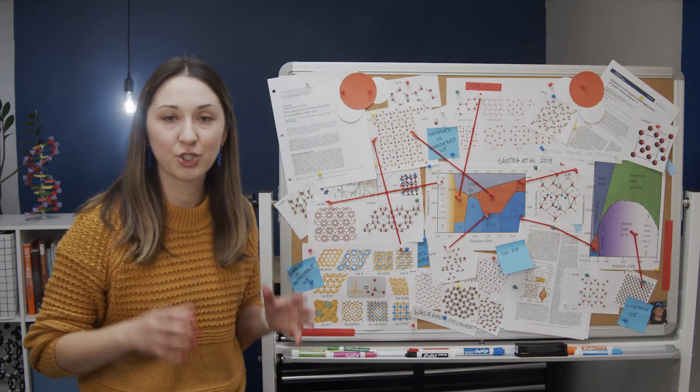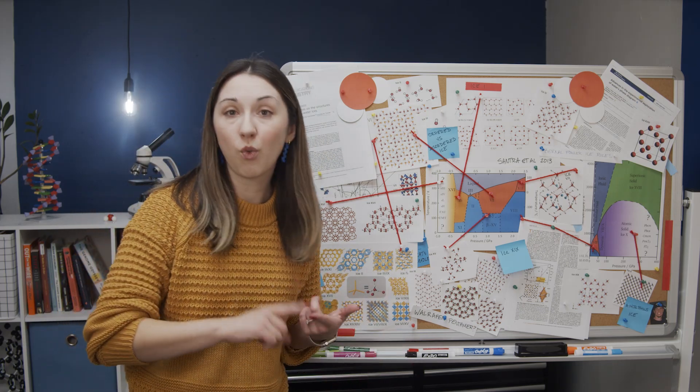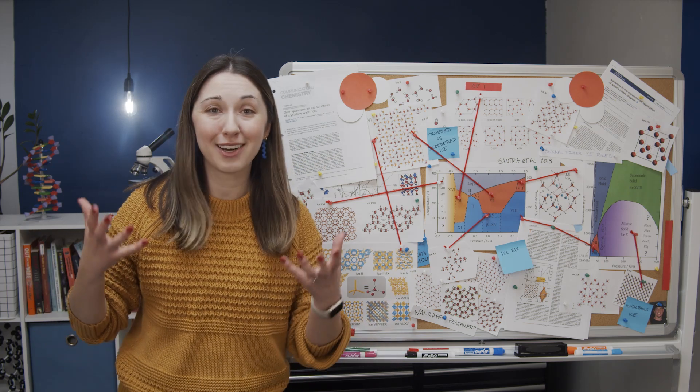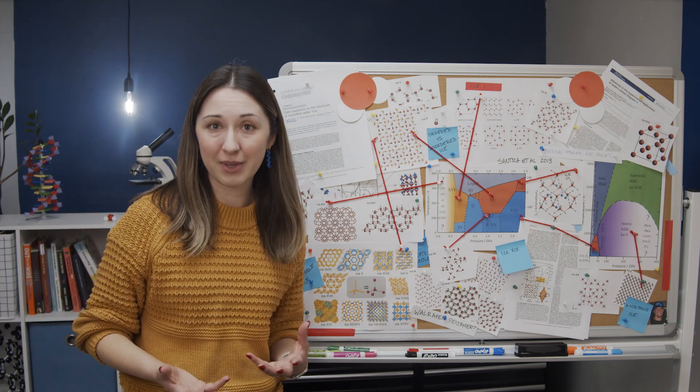The numbers just indicate the order that they were discovered in, not anything about their actual structure. But this first batch of ices, 1, 3, 5, 6, and 7, are likely found on icy moons in our solar system, places like Jupiter's moon Ganymede.